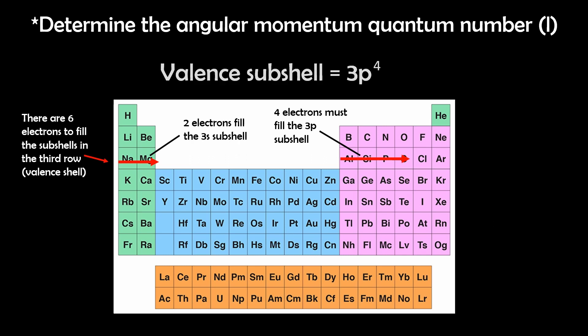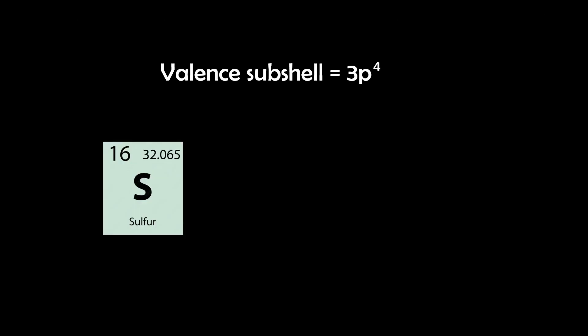So the valence subshell is 3p4, and we simply fill in the other subshells before this one. So the full electron configuration for sulfur is 1s2, 2s2, 2p6, 3s2, 3p4.